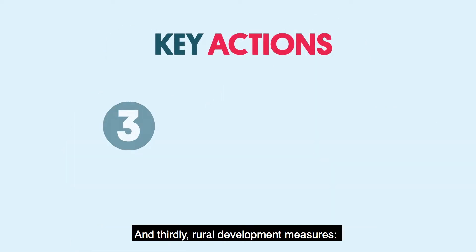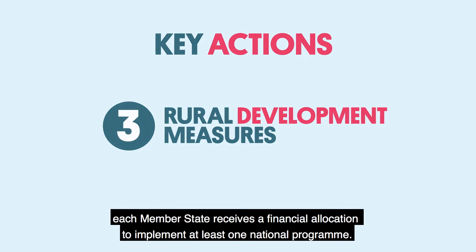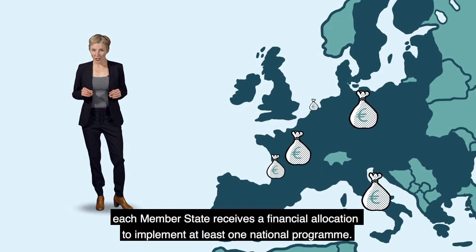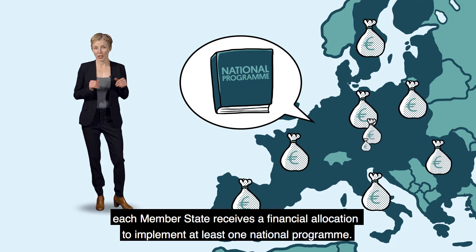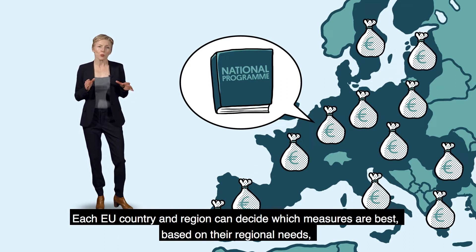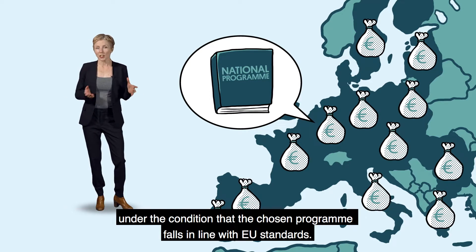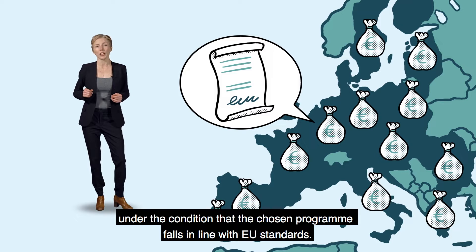And thirdly, rural development measures. Each member state receives a financial allocation to implement at least one national programme. Each EU country and region can decide which measures are best based on their regional needs, under the condition that the chosen programme falls in line with EU standards.